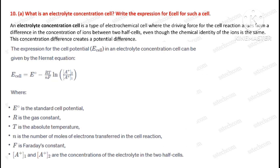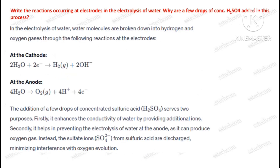Question number ten, first part: What is an electrolyte concentration cell? Write the expression for E-cell for such a cell. Second part: Write the reactions occurring at the electrode in the electrolysis of water. Why are a few drops of concentrated sulfuric acid added in this process?